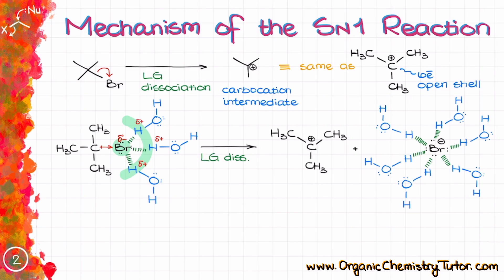And as the Br- leaves the molecule, our polar protic solvent completely surrounds that, essentially encapsulating it. So we have bromine surrounded by those positively or partially positive protons and that creates a solvation shell that stabilizes our Br- and that also prevents it from attacking our carbocation right back.